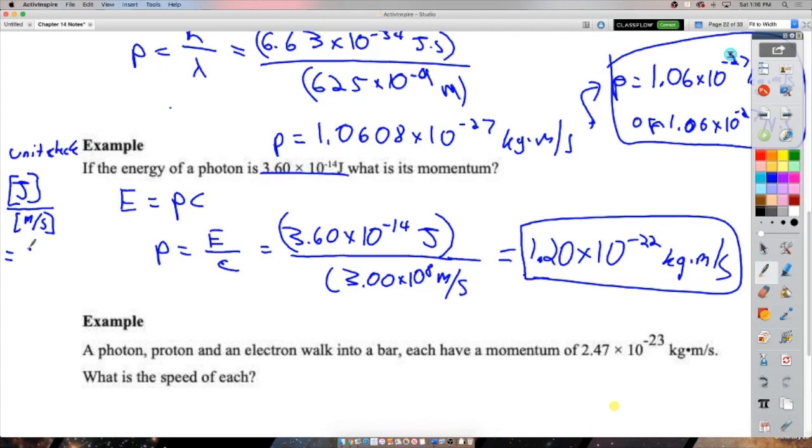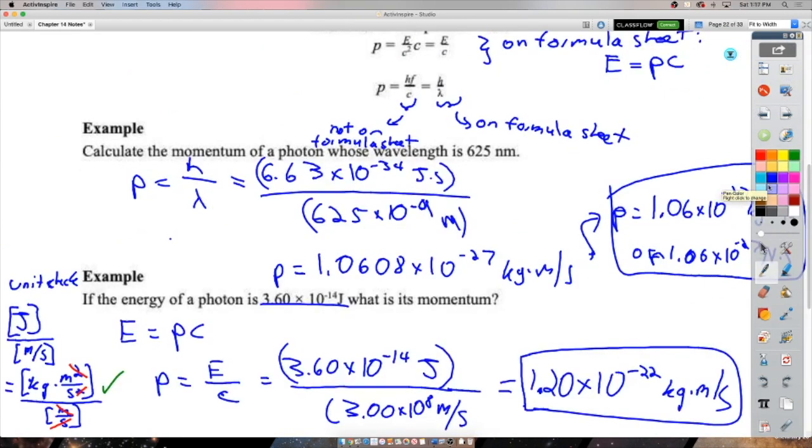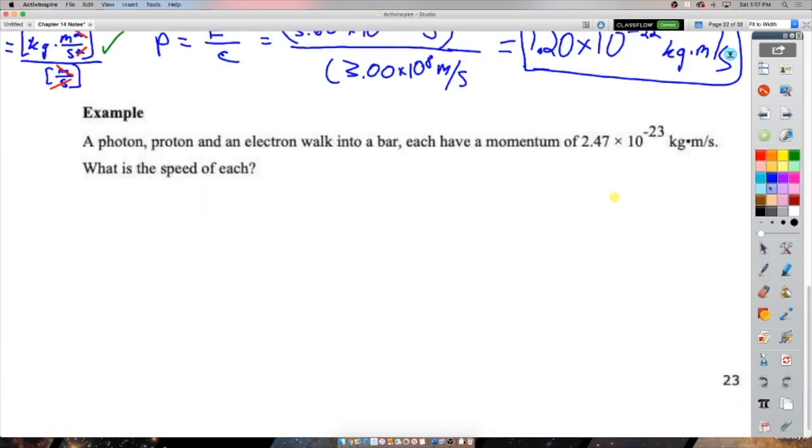So a joule over a meter per second. Remember a joule, mv squared, that's always the equation I go to to remember what a joule is. So mv squared is a kilogram meter squared per second squared. We have a meter squared over a meter, so that cancels. We have one over second squared over one over second, so one of the one over seconds cancels. And look at that, kilograms meters per second. What's that the unit of? Momentum. Never did one here, but we could. And look at that, same thing, kilogram meter per second.